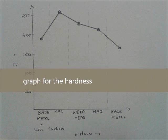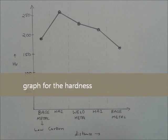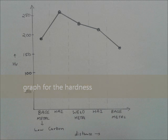This is a graph we have got for the hardness of the various zones of our sample. Here, we can clearly see that the maximum hardness is of the heat affected zone and the weld zone as expected according to our theoretical knowledge.